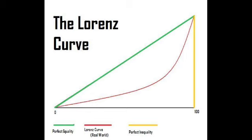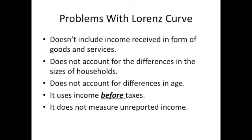Perfect inequality, represented by the golden line, is when one person makes all of the income. This creates many problems and causes economic and political unrest. It is important to note that the Lorenz curve does not account for goods and services received, differences in household sizes and age, and it uses income before taxes while not accounting for unreported income.